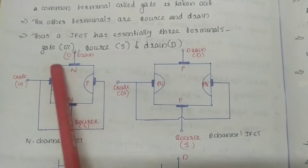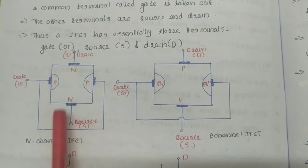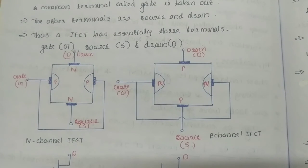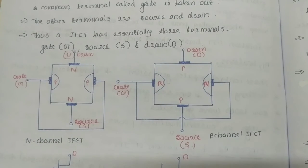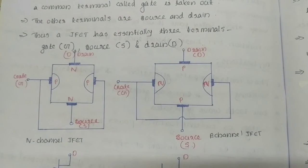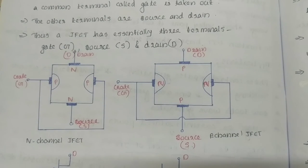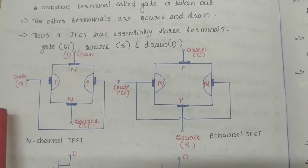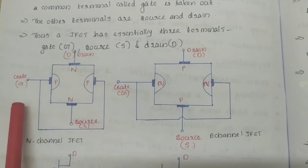The channel is the path through which charge carriers flow. In N-channel JFET, the channel is N-type material, and P-type material is added forming PN junctions. At the junction, a depletion region is formed and the current flow is controlled by the gate-to-source voltage. The gate is reverse biased.